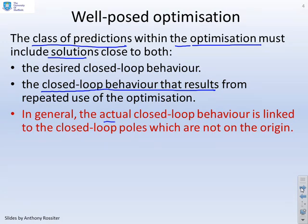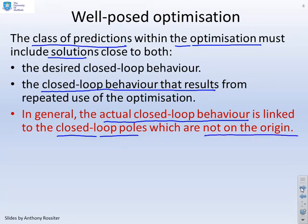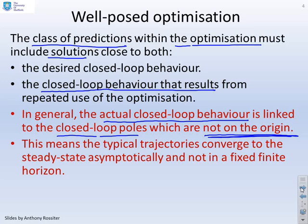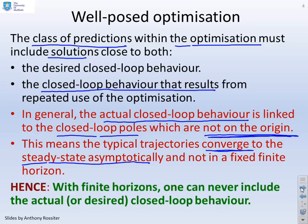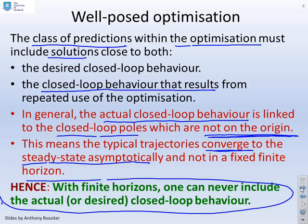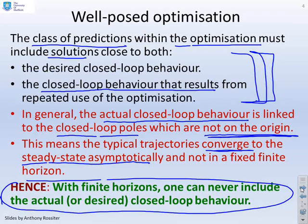In general, the actual closed-loop behaviour is linked to the closed-loop poles. Those closed-loop poles are not usually on the origin, which means that typical closed-loop trajectories and optimum trajectories only converge to the steady state asymptotically — they do not do so in a fixed finite horizon. So if you use finite horizons, you cannot satisfy these two key requirements. You can never include, certainly not exactly, the actual or the desired closed-loop behaviour.